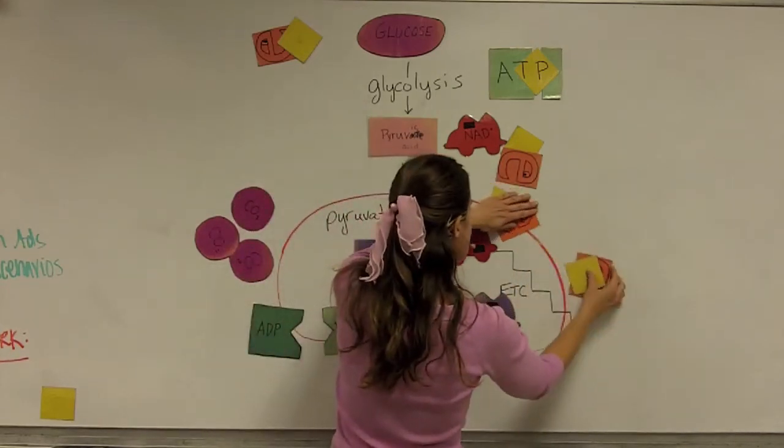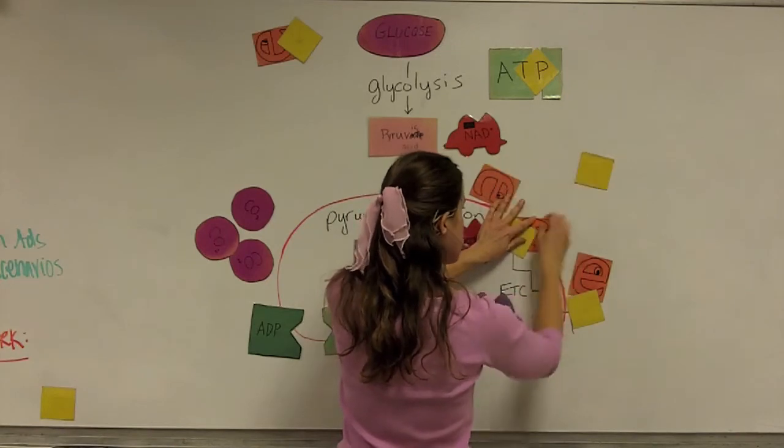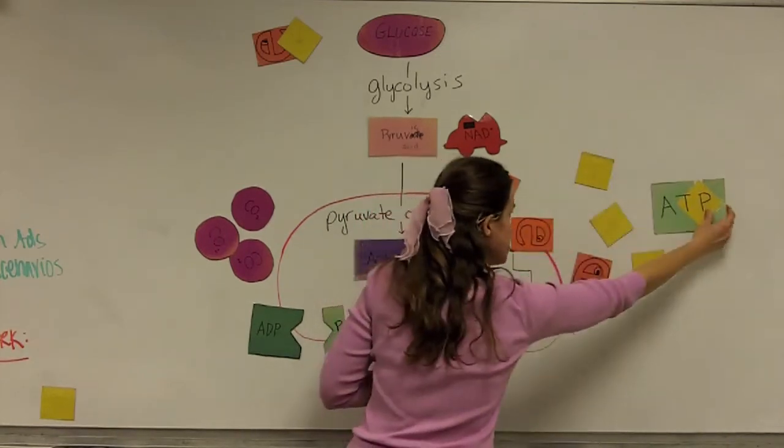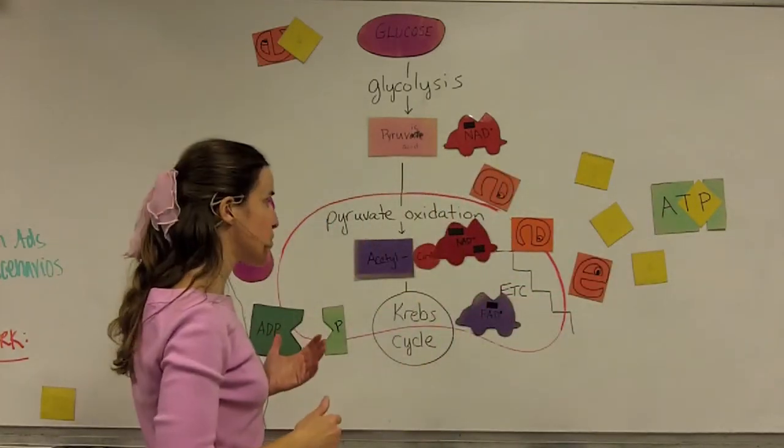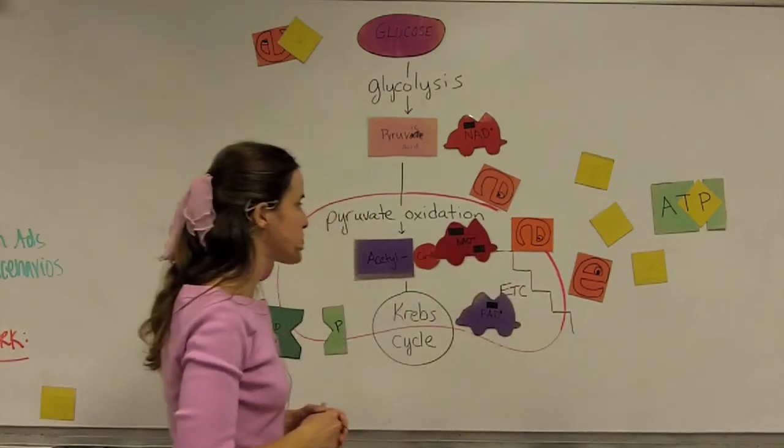As the electrons move down the electron transport chain, the energy from them is used to make ATP, a lot of ATP. Most of the ATP generated by cellular respiration is generated in the electron transport chain from high-energy electrons.